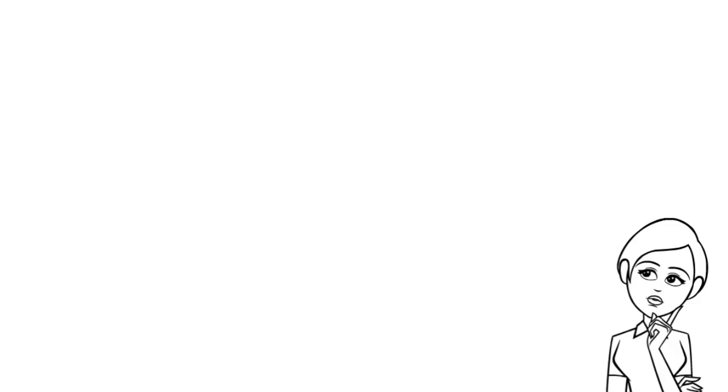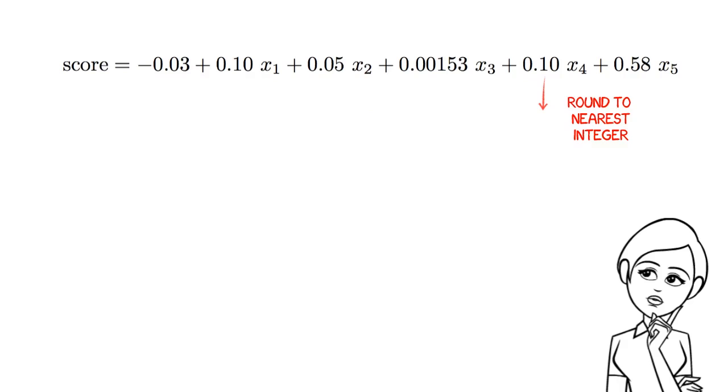Balancing these requirements can be hard. To see why, take a look at the score function from logistic regression. Here, rounding eliminates variables by setting small coefficients to zero.